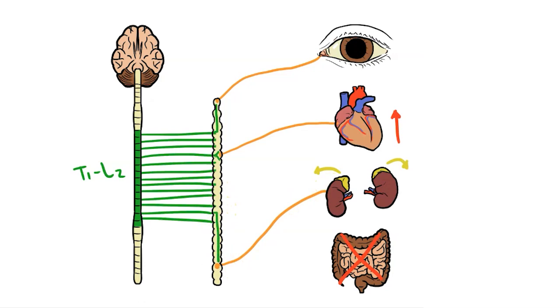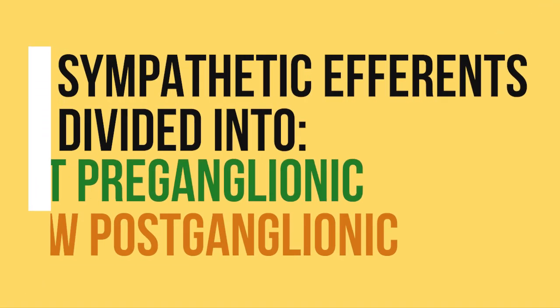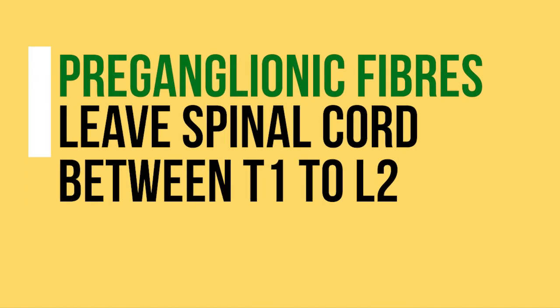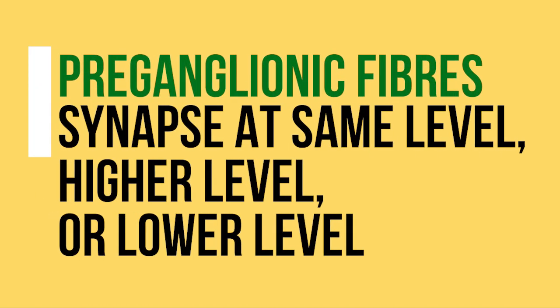So that's why we have this sympathetic chain. Before I look at a clinical scenario, let's recap the main points. The sympathetic efferents are divided into fast preganglionic fibres and slow postganglionic fibres. Preganglionic fibres are only found between T1 and L2. These enter the sympathetic chain and can do one of three things: synapse at the same level, synapse at a higher level, or synapse at a lower level.